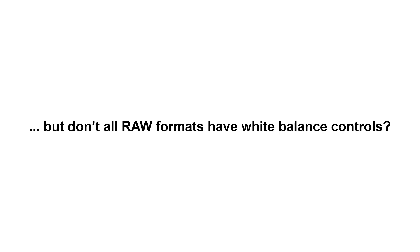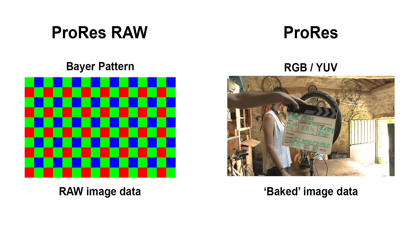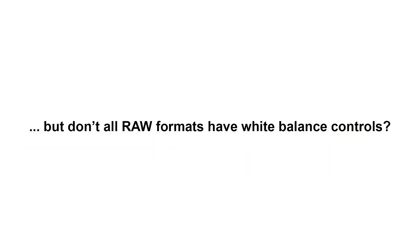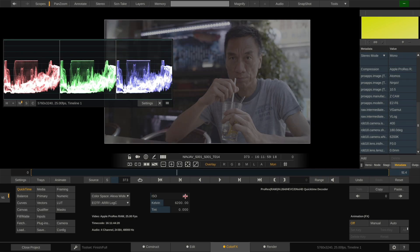Some of you might ask: don't all RAW formats have white balance controls? If ProRes RAW doesn't have white balance controls, how can it be a true RAW format? Well, as we've now established, whether or not a format can call itself a true RAW format depends on what kind of data it stores — Bayer pattern or baked RGB imagery. That doesn't change the fact that Kelvin, Tint and ISO Gain are super helpful parameters when developing a RAW image inside a color corrector or editor. We've listened to our users asking for more control over the ProRes RAW debayer, and now Scratch and Play Pro ship with white balance controls for ProRes RAW.